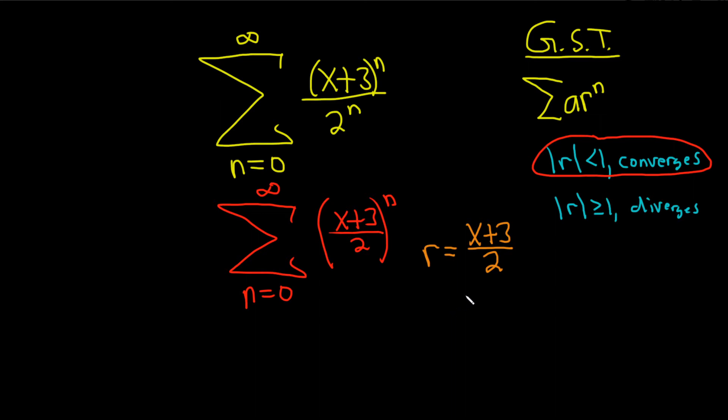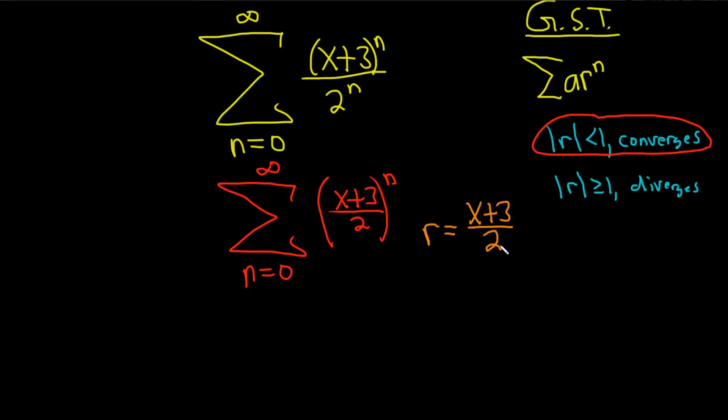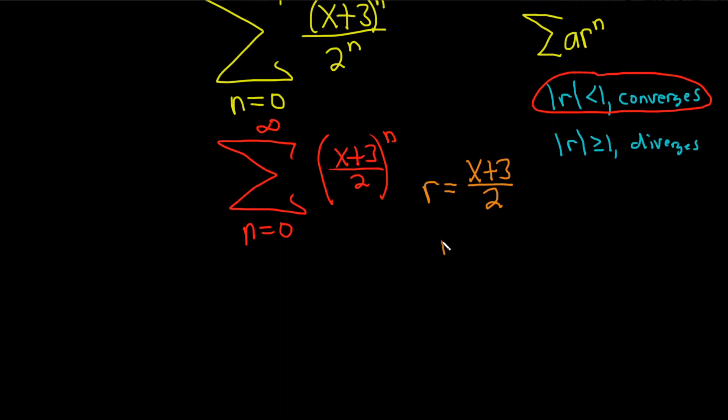And we want convergence, so we want this to be less than 1 in absolute value, so we force it. So we're basically going to put absolute value bars around this, (x+3)/2, and we want it to be less than 1, because we want to force convergence.